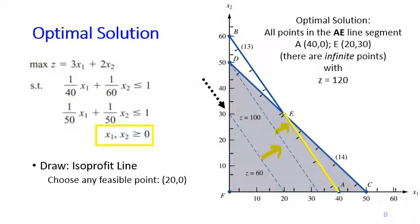All points on the line segment from A (40, 0) to E (20, 40) are optimal points, meaning we have an infinite number of optimal solutions — because a line segment contains infinitely many points. Every point along the AE segment yields the same objective value z = 120. This is why we call this problem one with alternative or multiple optimal solutions.